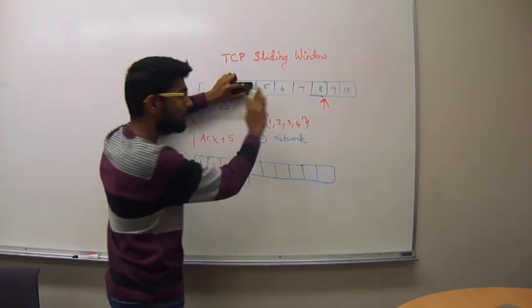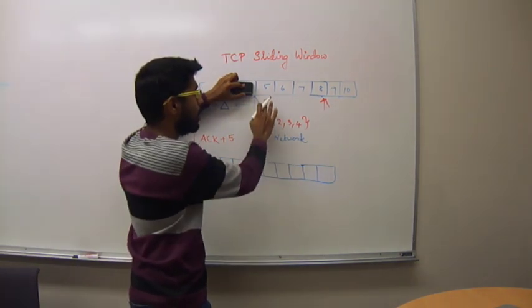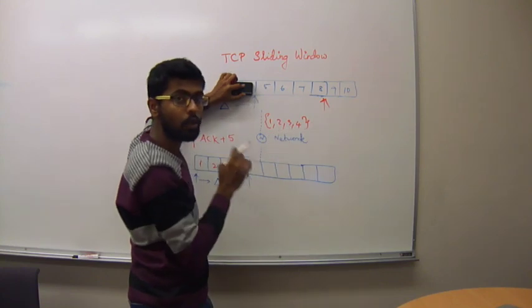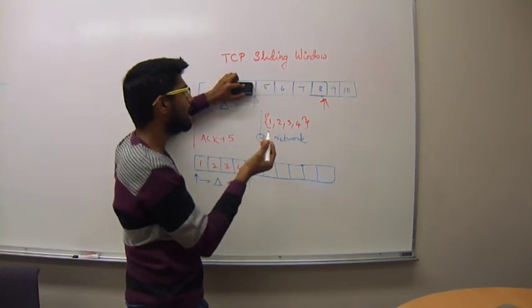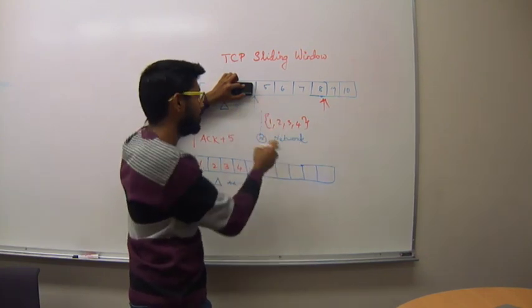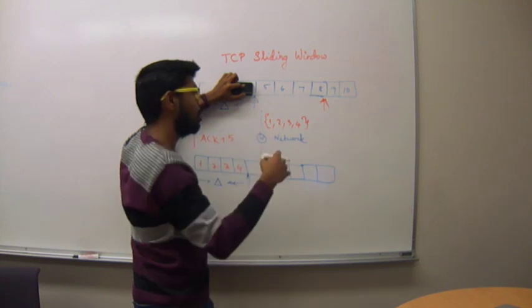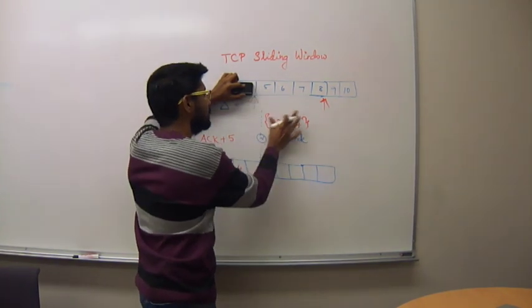So the window has now slid over the data that has been acknowledged by the receiver and now the remaining packets have to be sent over the network. Now assume that the data is lost in the network due to some reason. Let's say it has lost because of an inherent network error or maybe it got dropped due to some condition.